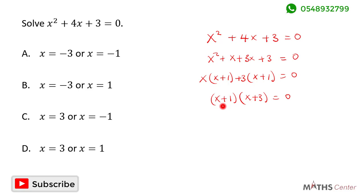The first bracket is x plus 1. So you have x plus 1 equals zero, and when we solve this we get x equals negative 1.